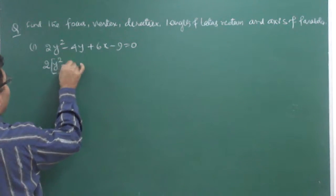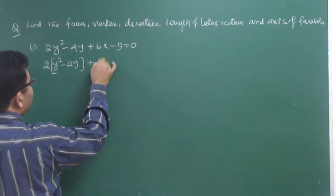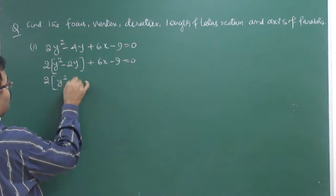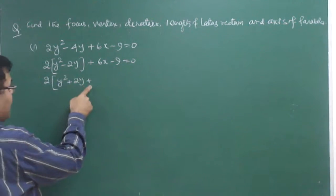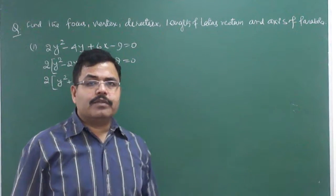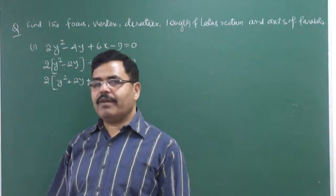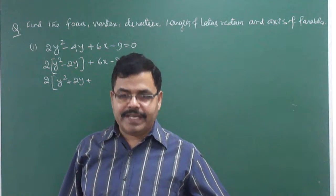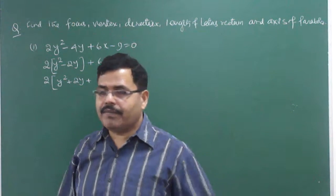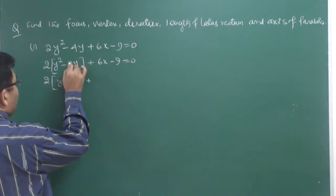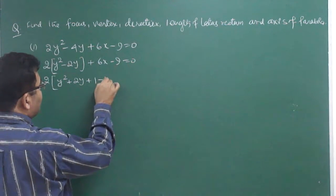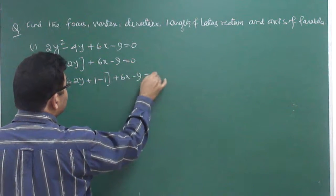We will first make it into a perfect square. We have 2(y² - 2y) + 6x - 9 = 0. To make a perfect square, the coefficient of y² must be unity. Then add and subtract the square of half the coefficient of y. Half of coefficient of y is 1, and square of 1 is 1. So add and subtract 1 inside.